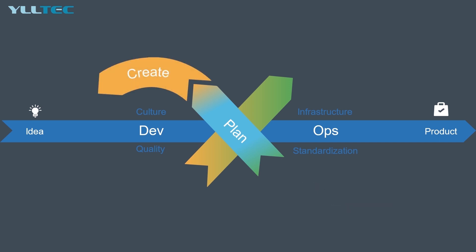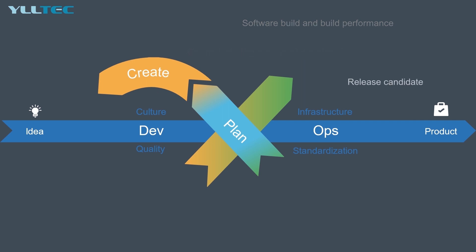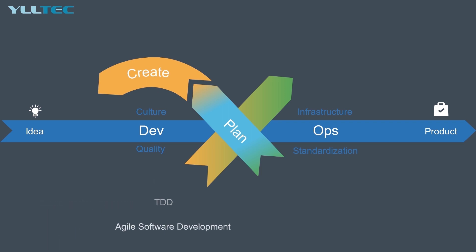Moving on from planning, you want to create stuff — your code, your builds. Create is composed of building, coding, and configuring the software development process. Activities include design and software configuration, coding including code quality and performance, software build and build performance, and creating a release candidate. Common disciplines and methodologies include build automation, programming languages, software development life cycles, software configuration management, test driven development, and agile software development. Tools and technologies depend very much on which type of language and requirements and architecture you have.